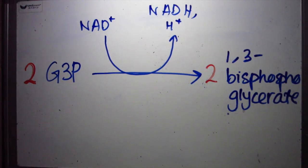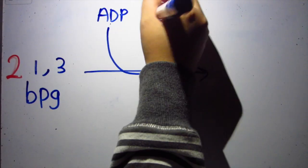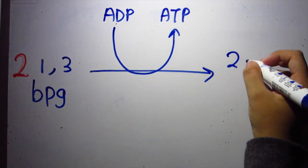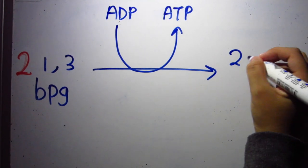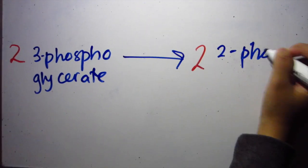NADH is produced. 1,3-BPG loses a phosphate, turns ADP into ATP. 3-phosphoglycerate, then 2-phosphoglycerate.